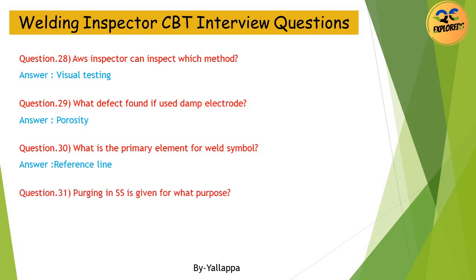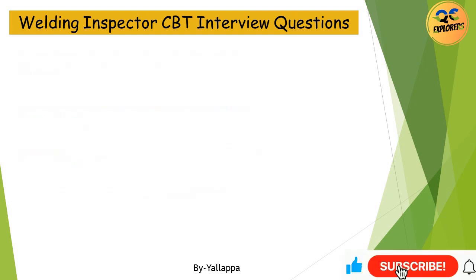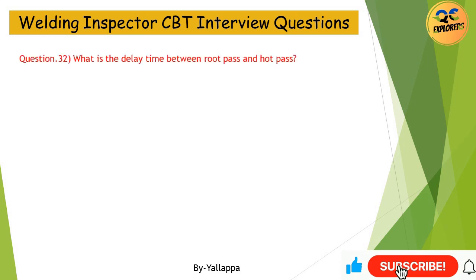Question 31: Purging in SS is given for what purpose? Answer: To prevent oxidation in the root. Question 32: What is the delay time between root pass and hot pass? Answer: 5 minutes for vertical down, 15 minutes for vertical up — per SESW 12.